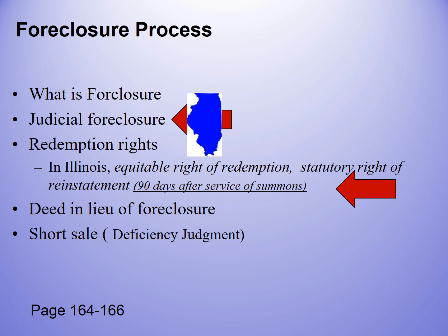A deed in lieu of foreclosure is where we go to the lender, give him the deed, and he stops foreclosure — essentially handing him the keys so he doesn't foreclose. A short sale is a sale where the sale amount won't be enough to cover what the borrower owes the lender. The deficiency judgment — the difference between what the property sells for and what is owed — can be a separate judgment filed by the lender against the seller. As an agent, you want that deficiency judgment either waived or reduced. Be aware of deficiency judgments.